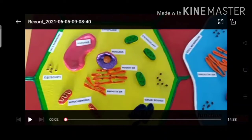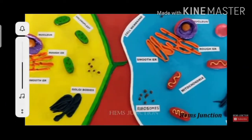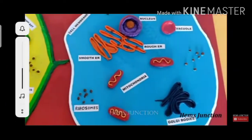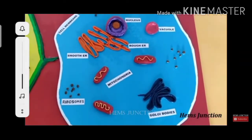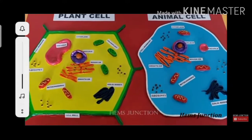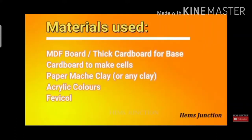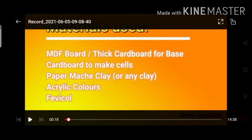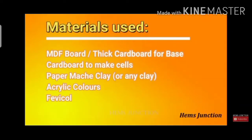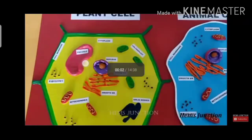These are the diagrams after making the plant and animal cell with the help of clay and the paper board. Now, how we have to prepare these animal and plant cells — this is the material you will require. You will take thick cardboard.